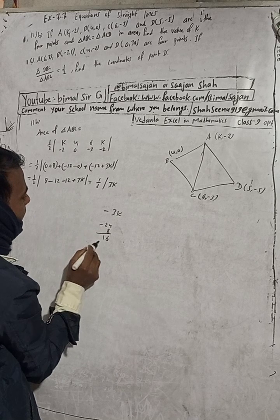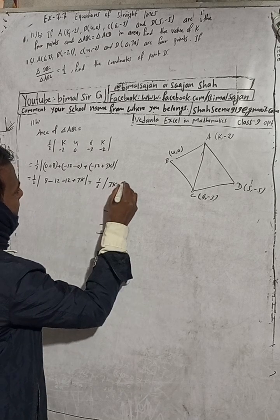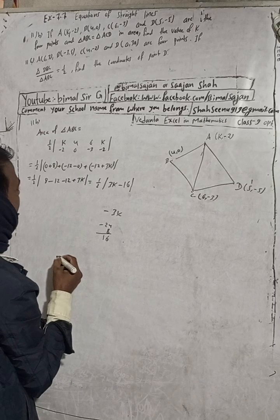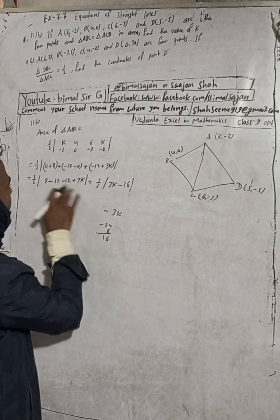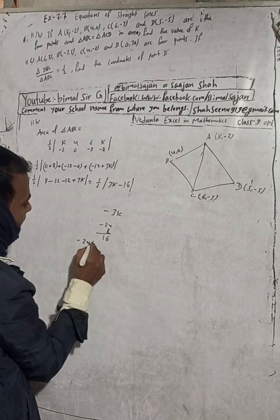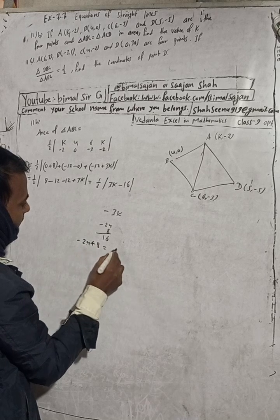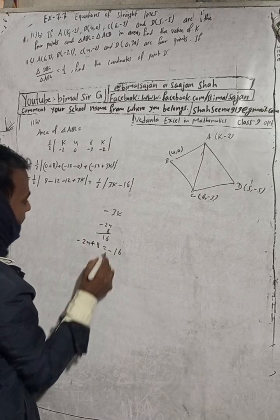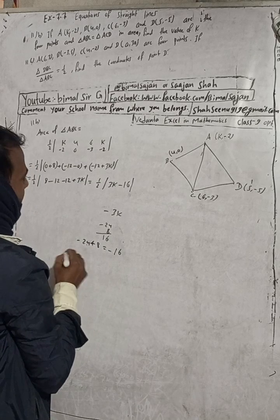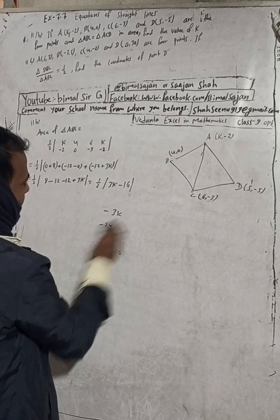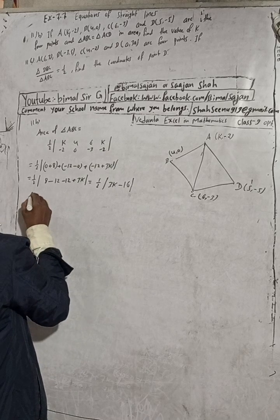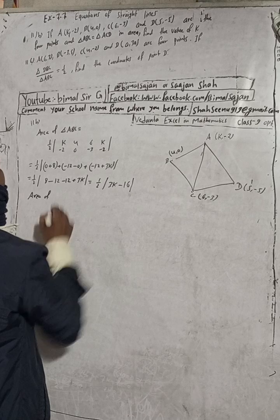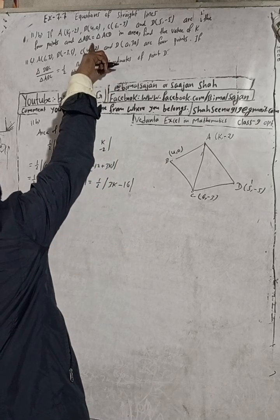We have 1 by 2 times 3K minus 16. Now minus 24 plus 8 is minus 16. Since minus 24 is greater, the result is minus 16. So the area of triangle ABC is 1 by 2 of 3K minus 16.